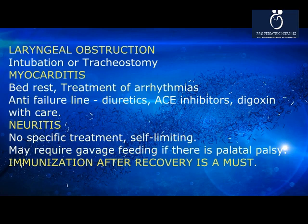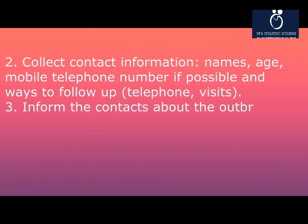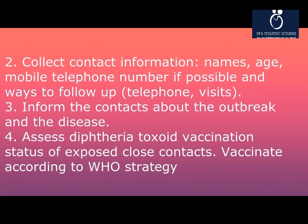Immunization after recovery is a must. Care of all close contacts: identify close contacts of probable cases irrespective of age. (1) Household members — all persons who sleep in the same house during the last 5 nights before onset of disease, and any persons with close contact (less than 1 meter) for a prolonged time (over 1 hour) during the 5 days prior to onset, including caretakers, relatives, friends who regularly visit, and medical staff exposed to oral or respiratory secretions. (2) Collect contact information: names, age, mobile telephone number, and ways to follow up.